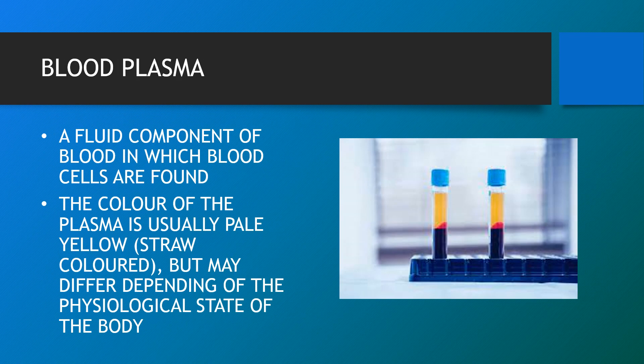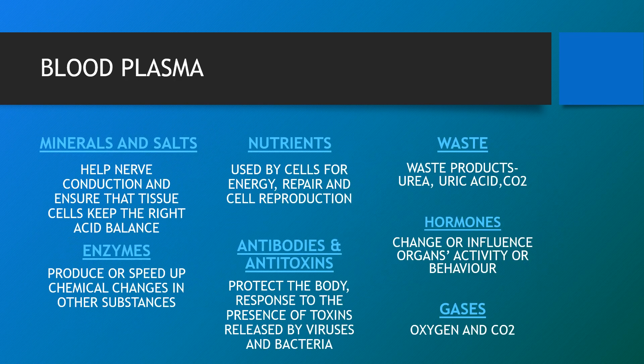Blood plasma is a liquid component of blood that holds the blood cells, proteins and other constituents of whole blood in suspension. The colour of the plasma is usually pale yellowish, straw-like, but may differ depending on the physiological state of the body. As mentioned earlier, it makes up about 55% of the body's total blood volume. Plasma carries water, salts and enzymes.